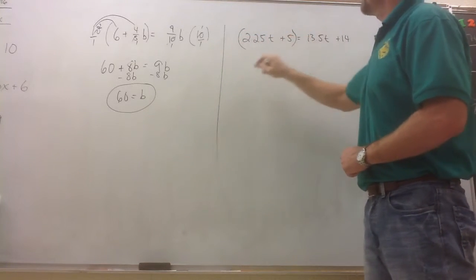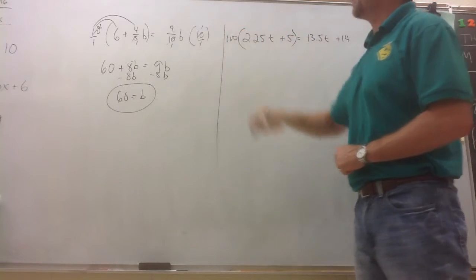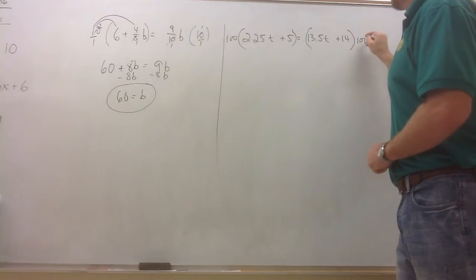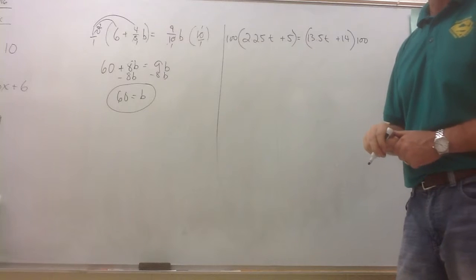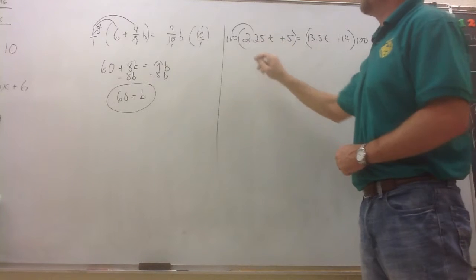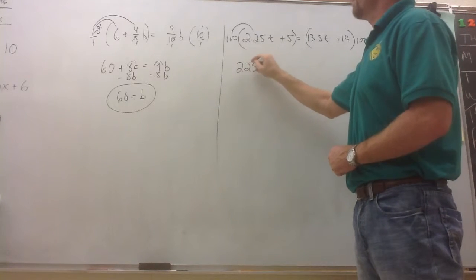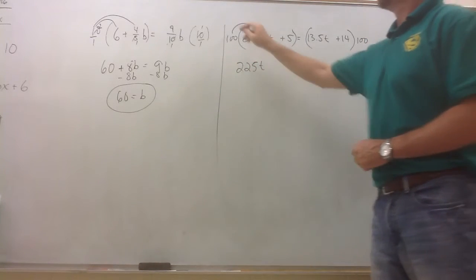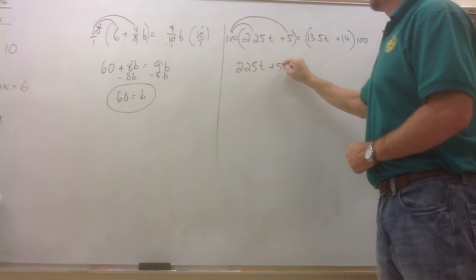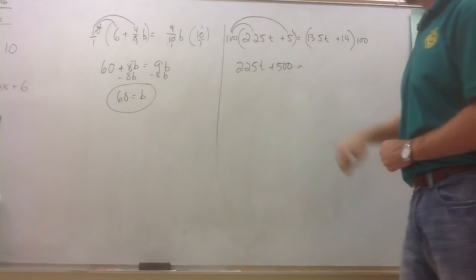I'm going to multiply everything on the left side of the equation by 100 and everything on the right side by 100. One more time with the distributive property. 100 times 2.25t is 225t. 100 times positive 5 gives me 500. Takes us to the equal side.